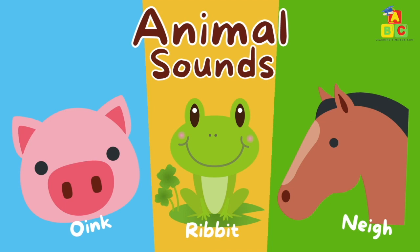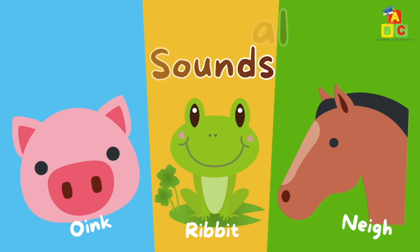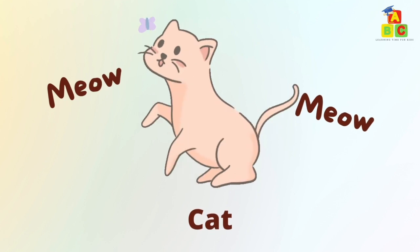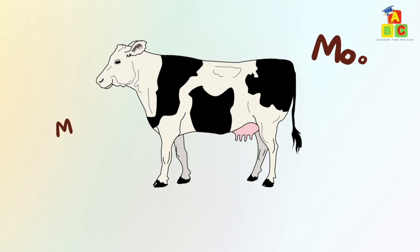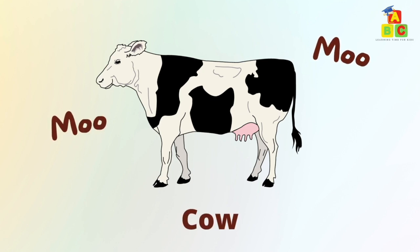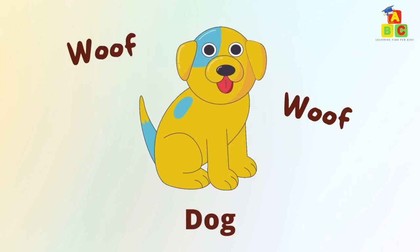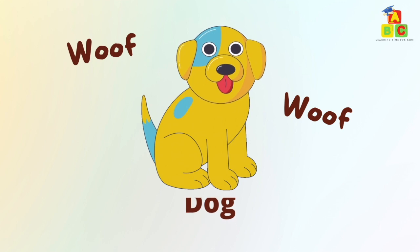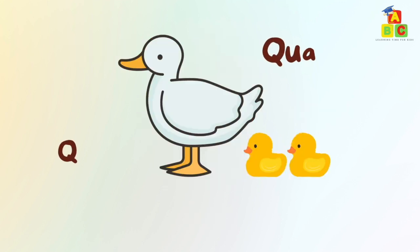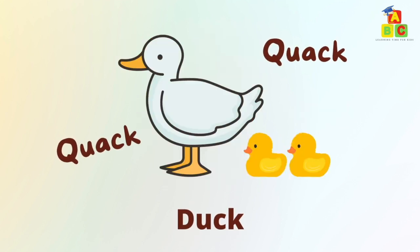Animal sounds. Let's learn about animal sounds. The cat says meow. The cow says moo. The dog says woof. The duck says quack.